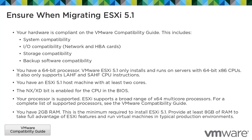Ensure you have 2GB of RAM. This is the minimum required to install ESXi 5.1. Provide at least 8GB of RAM to take full advantage of the ESXi features and run virtual machines in typical production environments.